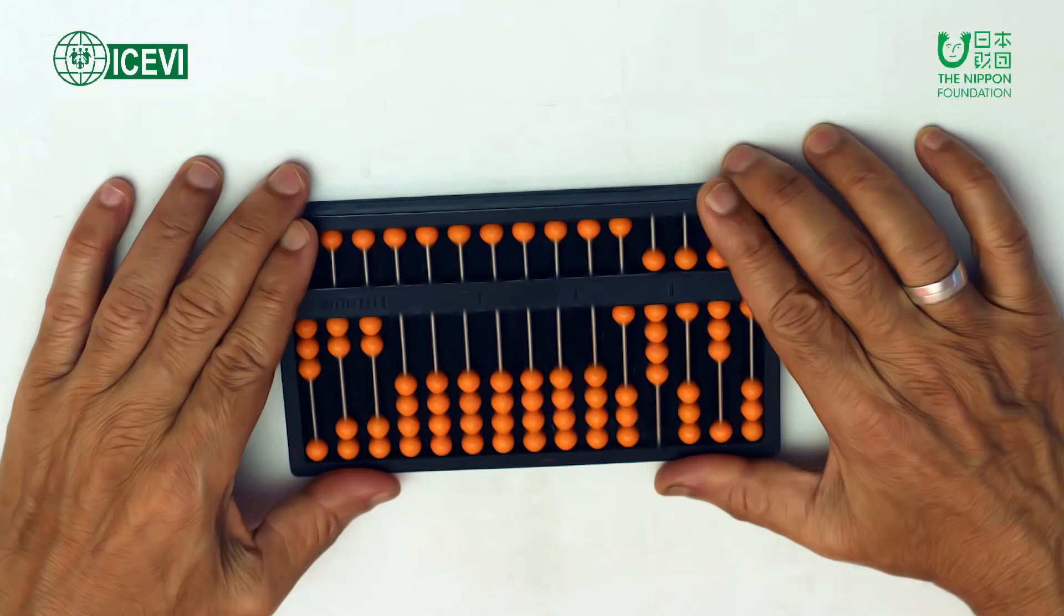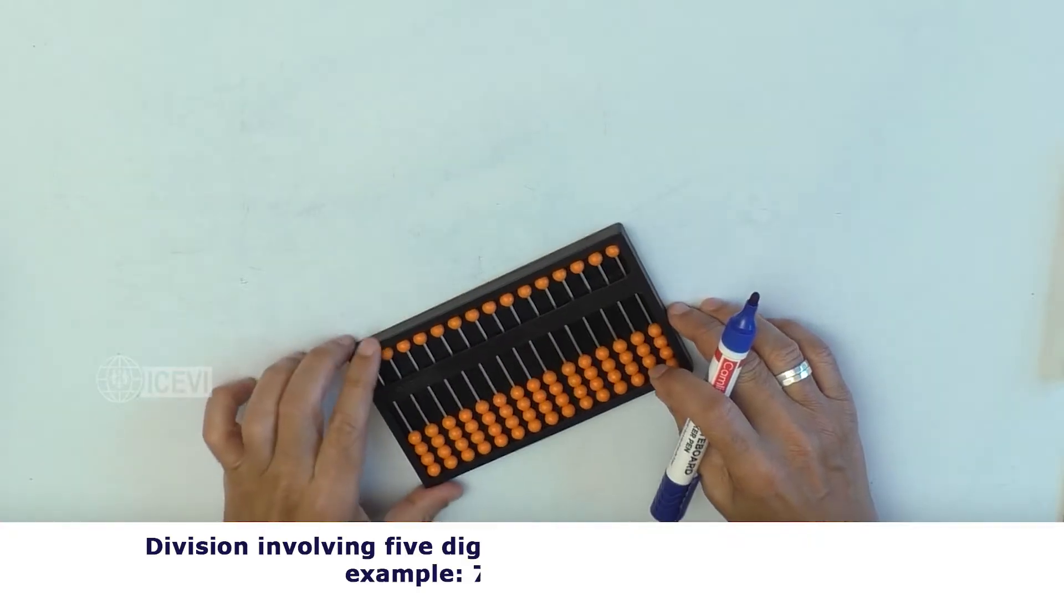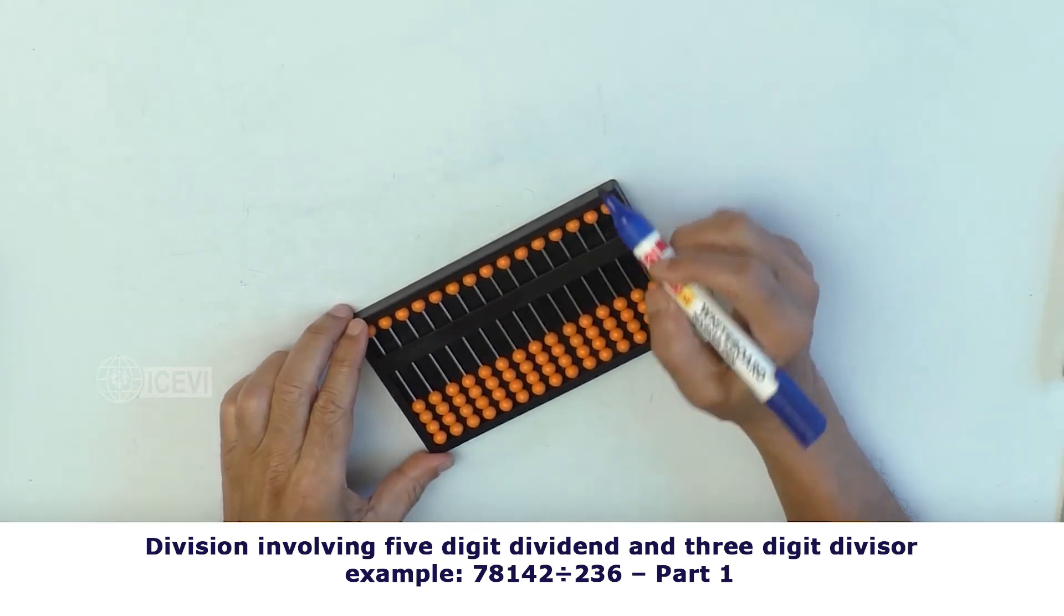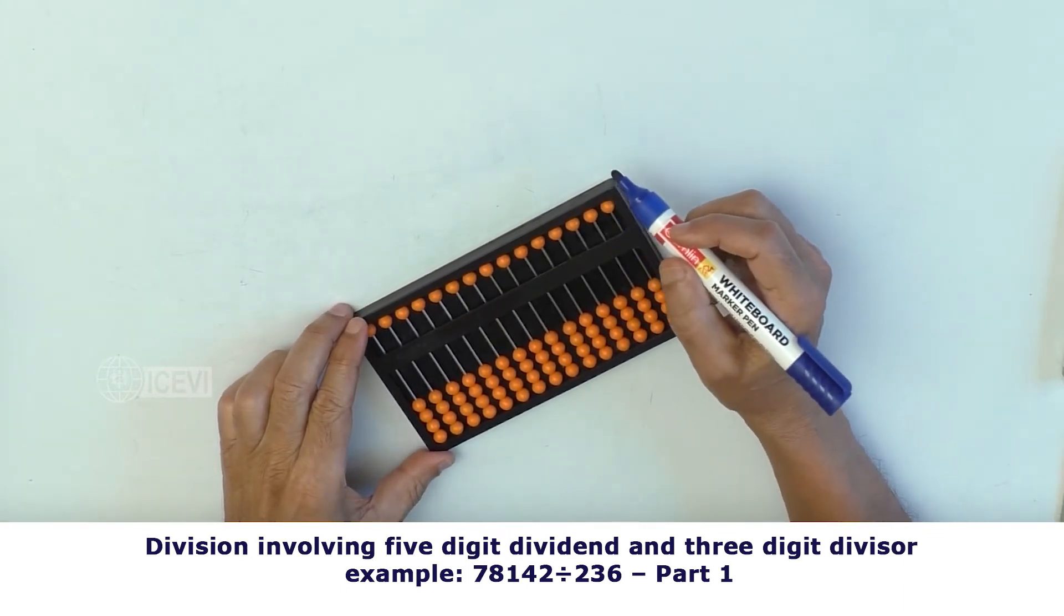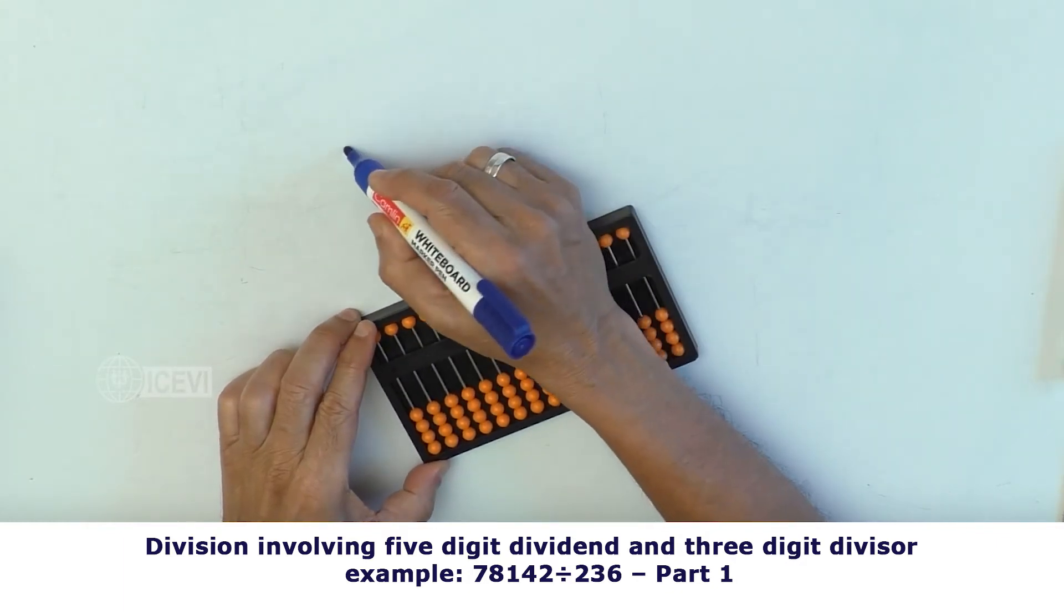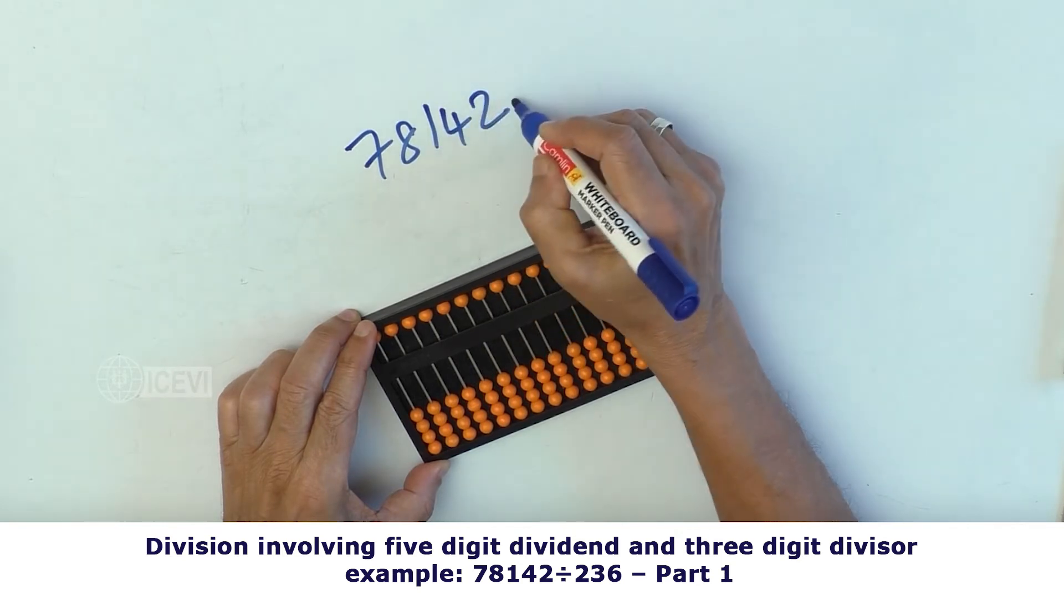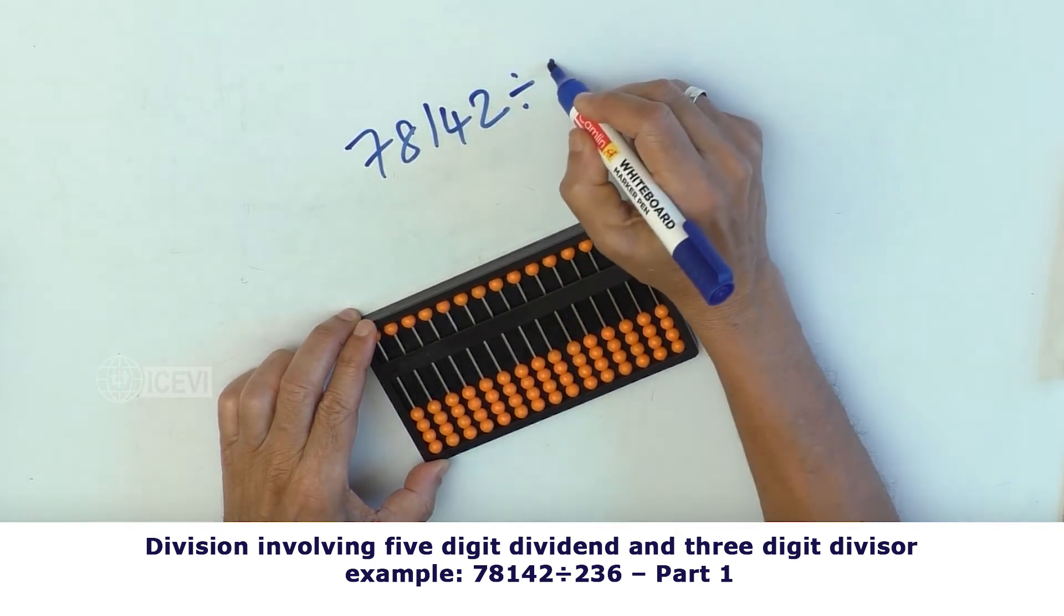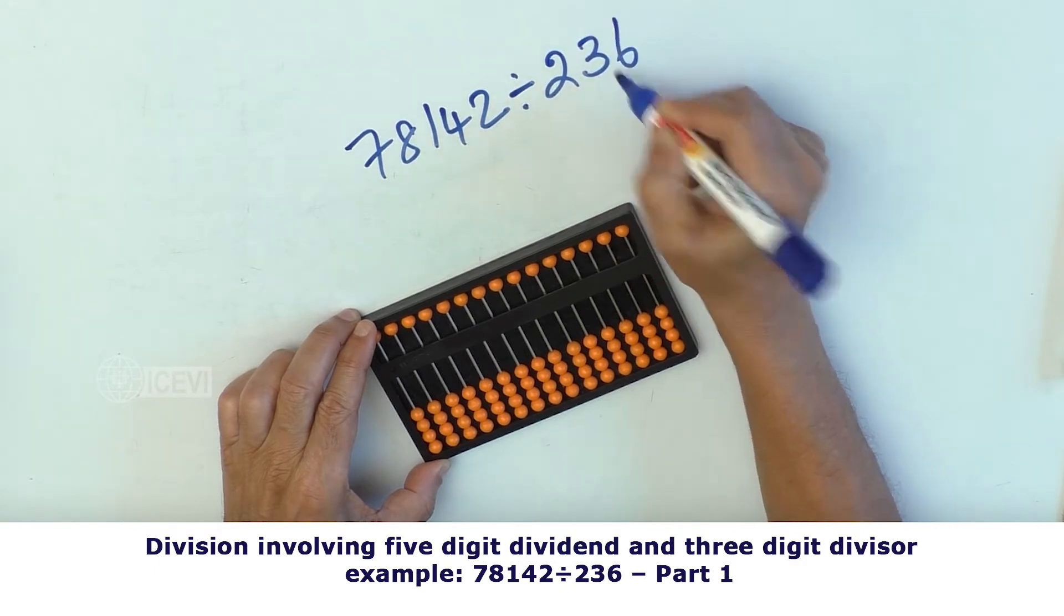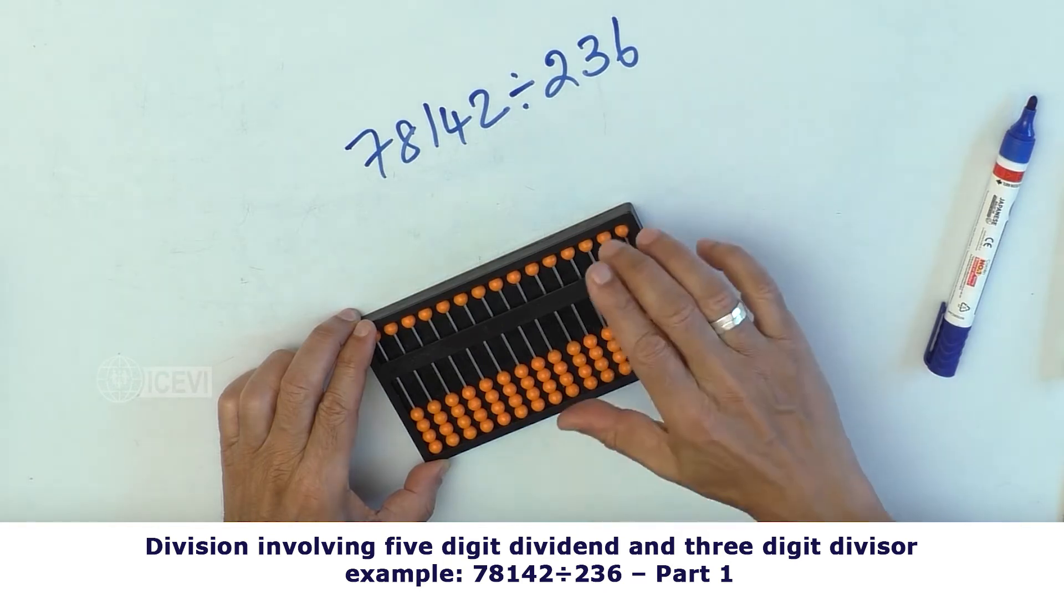The ICEVI, the Nippon Foundation, Mathematics Package for Teachers, Video Series, Abacus as a Mathematical Tool. Title of the video: Division Involving Five-Digit Dividend and Three-Digit Divisor. Example: 78,142 divided by 236. Let us take up part 1 now.